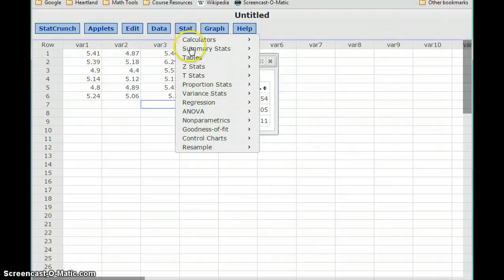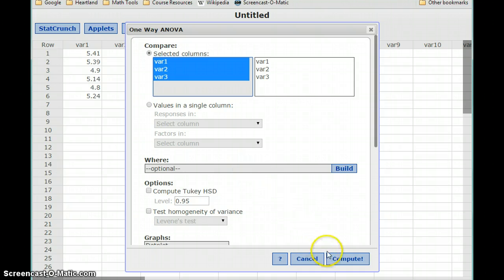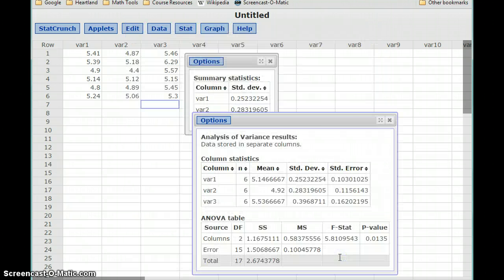To get the ANOVA test, we'll select stat, ANOVA, and we'll only be looking at the one-way ANOVA test in this class. We'll select all three data values. The hypotheses are always the same for an ANOVA test, so there's nothing else that we have to establish here, and click compute.